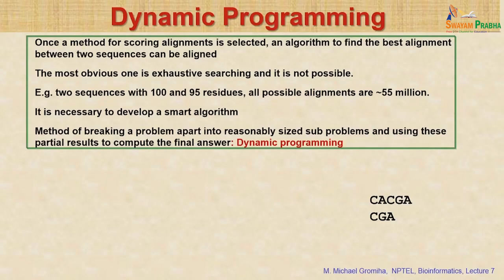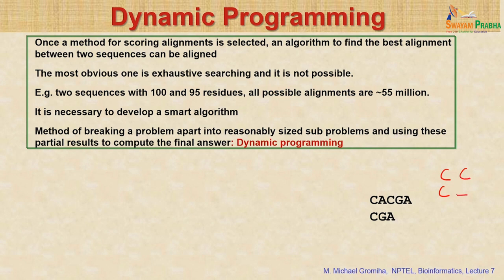For example, if I give sequence CA and CGA, you first take the first characters C and C. There are 3 different ways you can align them: you can put C and C together, or you can put C and a gap in the second sequence, or you can put a gap in the first sequence and C in the second.